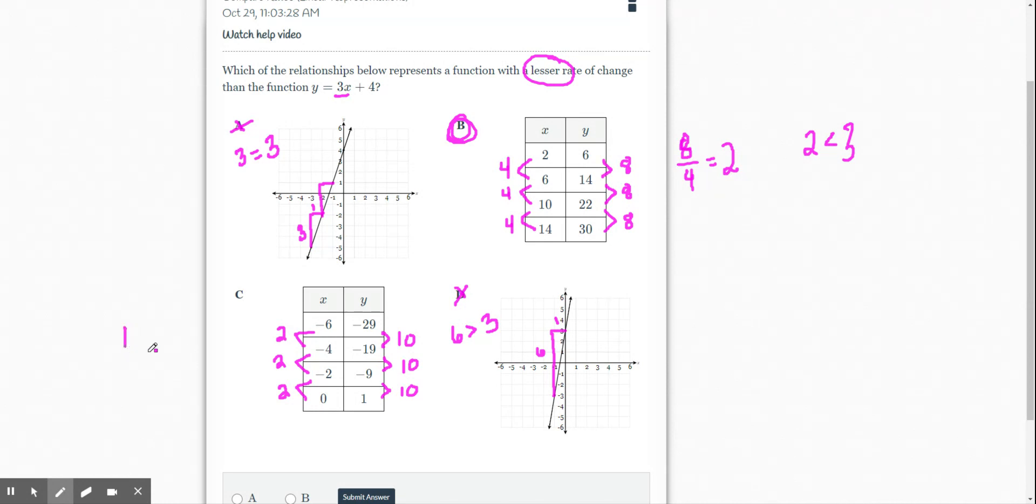And then, sorry about that. 10 divided by 2, oh my gosh, is 5. So our slope for C is 5. And we know 5 is actually a greater slope than 3. So we were right when we said, hey, okay, the answer to this is going to be B.